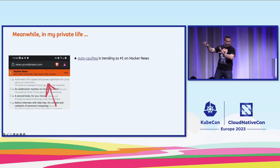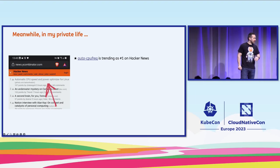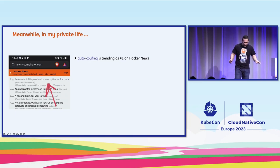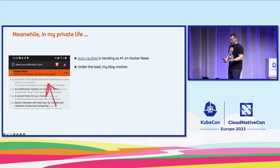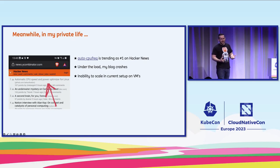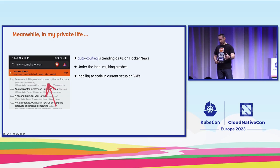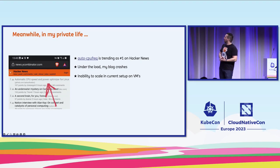Parallel to all of this, as part of my private life, my open source tool AutoCPU-FRAC was trending as number one on Hacker News pretty much the whole day. Under the load, my private blog went down because people were coming to see what the project was about. Eerily enough, my private setup was very similar to what we had at MLP — containers and workloads as part of Docker Compose files deployed to VMs using Ansible. Although I was using AWS, specifically AWS LightSail, I still couldn't scale.